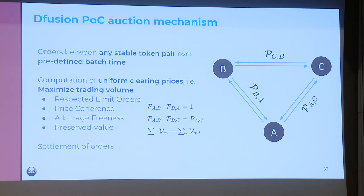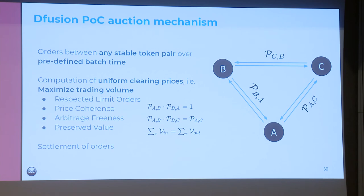Uniform clearing prices have special properties: they should maximize trading volume — but only for orders that respect the limit price. The prices should be coherent and arbitrage-free, meaning the price from token B to C should be exactly the same as going via the ring trade from B to A to C. And they should preserve value, meaning the same amount of tokens is bought and sold per token in each auction.